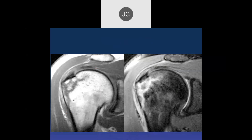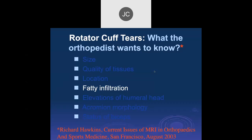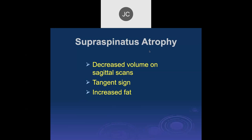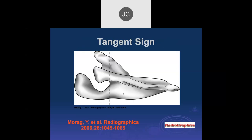Two coronal views show edema in the humeral head without a discrete tear — just a small non-displaced bony avulsion with the rotator cuff itself intact. Regarding fatty infiltration of the muscles: there are several ways to assess supraspinatus and infraspinatus atrophy — decreased volumes on sagittal scans, the tangent sign, and the amount of fat within the muscle itself.